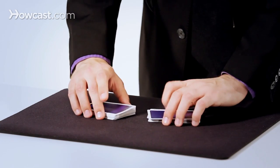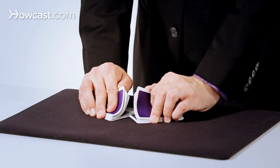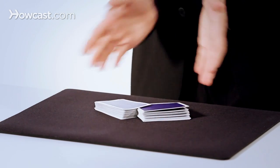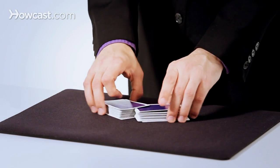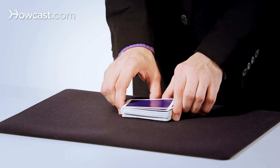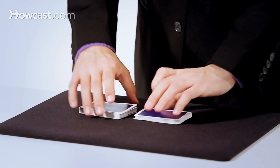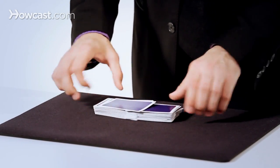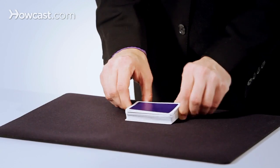So what you do is you simply place them next to each other, allow the two packets to go into each other, so it should look like an upside down V from your perspective, and then you bring them together. You simply press on the edges, and you can make the cards go into each other.